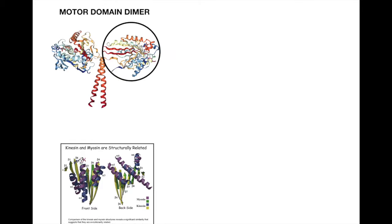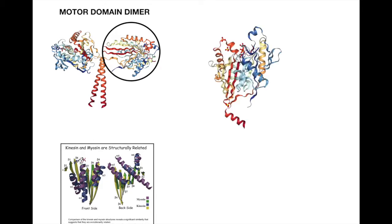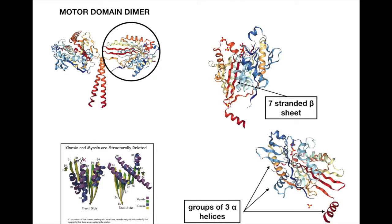Each monomer of the motor domain is made from a central 7-stranded beta sheet between two groups of 3 alpha helices each. The motor is connected by a flexible linker to a 50-amino-acid-long alpha helix that forms the dimerization domain of kinesin. The dimerization domain is believed to unzip slightly in the motion of kinesin.